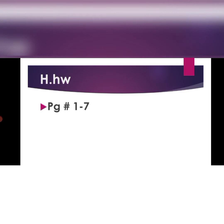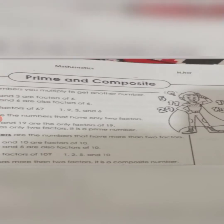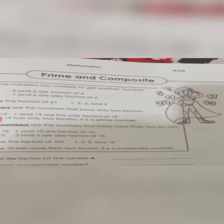I will explain page number 1 to 7 in this video. First of all, open your holiday homework. This is page number 1 of your holiday homework of maths. The main heading is prime and composite numbers. The prime numbers are the numbers that have only two factors: 1 and the number itself.